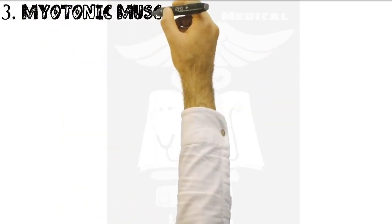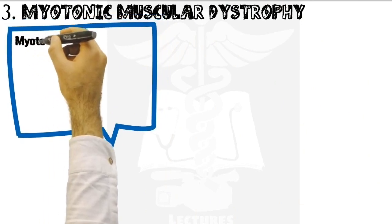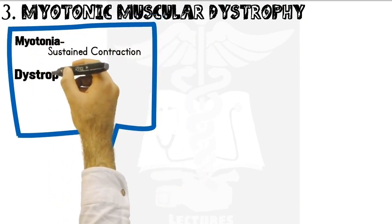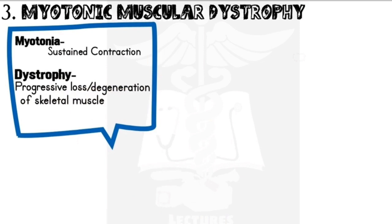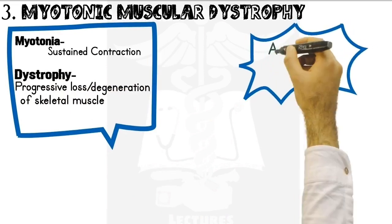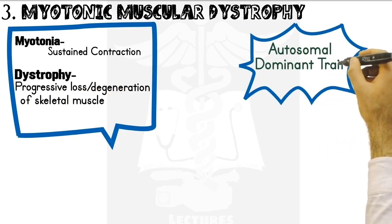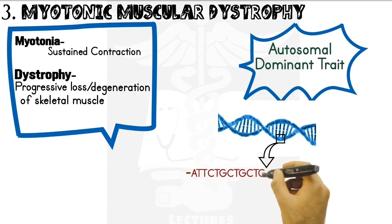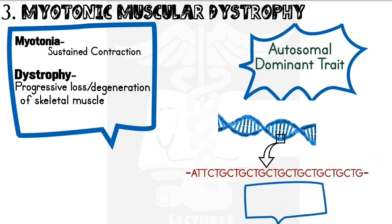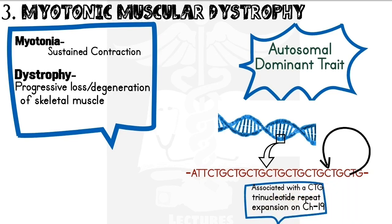Myotonic muscular dystrophy — what does myotonic mean? Myotonia means sustained contraction of the muscle. Dystrophy, as we know, is progressive loss or degeneration of skeletal muscle, though dystrophy can refer to any type of muscle being degenerated. Myotonic dystrophy is an autosomal dominant trait. At the molecular level, looking at the DNA, there is a specific sequence — a CTG trinucleotide repeat expansion on chromosome number 19 — that predisposes the person to this disease. If chromosome 19 has many CTG sequences, the person is most likely to develop this form of dystrophy.